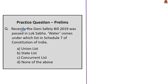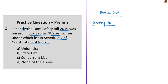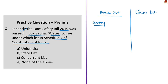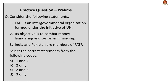The twentieth question relates to the Dam Safety Bill 2019 passed in Lok Sabha, asking under which list water falls in Schedule 7 of the Constitution. Water is in the State List under Entry 17, covering water supplies, irrigation, canals, drainage, embankments, water storage, and water power. However, this is subject to Entry 56 of the Union List, which covers regulation and development of interstate rivers and river valleys. The correct answer is option B: State List.